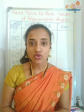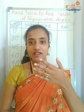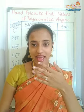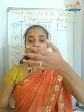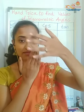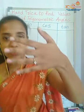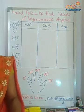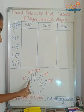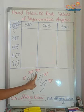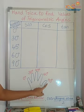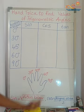We are going to use just a hand to find the values of all the trigonometric angles. Take out your left hand and face the palm towards your face. As you can see on the screen, the little finger is going to be 0 degrees, the next finger is 30 degrees, the middle finger is 45 degrees, this one is 60 degrees, and the thumb finger is going to be 90 degrees.